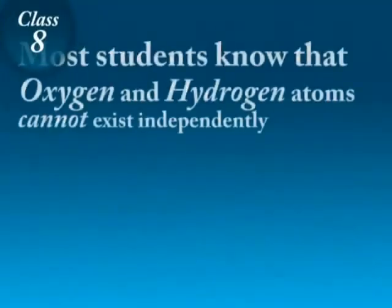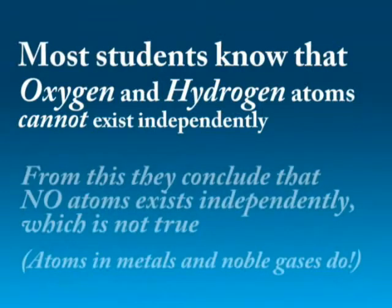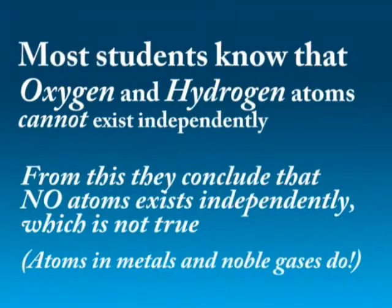I want to know what atom can exist independently. In chemistry, students are learning that atoms do not have independent existence, yet in the diagram it is shown that atoms are existing independently — only molecules are existing independently.